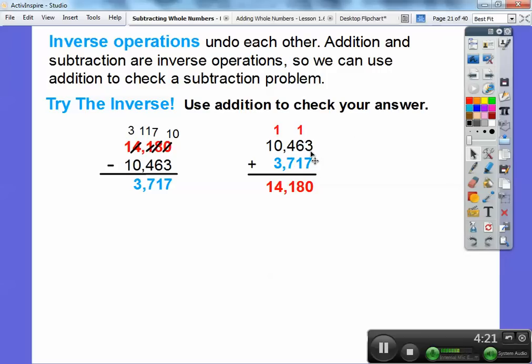I'm going to talk us through it. 7 plus 3 is 10, so I carried the 10 up here in the tens column. Then 1 plus 6 is 7, 7 plus 1 is 8. 4 plus 7 is 11, so there's the 11 and I carried the 1. 1 plus 3 is 4 and then finally 1 plus 0, so 14,180 and that's what we had. We can use that to check.